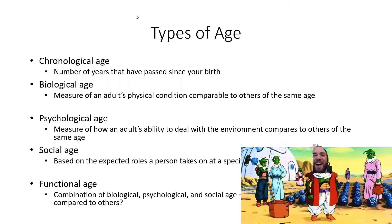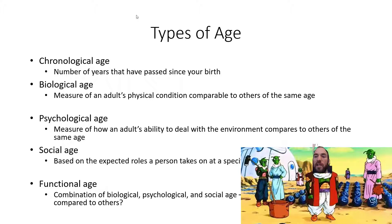When someone asks what your age is, defining age is not straightforward. There are multiple types: chronological age, defined as the number of years that have passed since your birth; biological age, a measure of adult physical condition comparable to others of the same age; psychological age, a measure of how an adult's ability to deal with the environment compares to others of the same age; social age, based on the expected roles a person takes on at a specific point in life; and functional age, a combination of biological, psychological, and social age — essentially how well an adult functions compared to others.